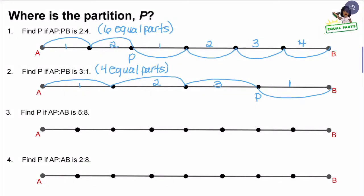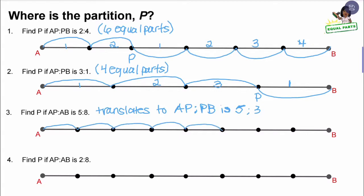Now for question three, the ratio is written differently. It says find P if AP to AB is five to eight. We really need to pay attention to what this is referring to. From A to P is five parts, but from A to B is eight parts — A to B is referring to the entire line segment. So we need to translate this ratio into the form used in the previous two problems. When we translate this ratio, it becomes AP to PB is five to three. Now let's separate this line segment to represent the ratio five to three.